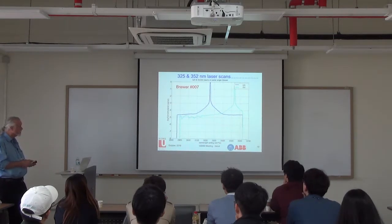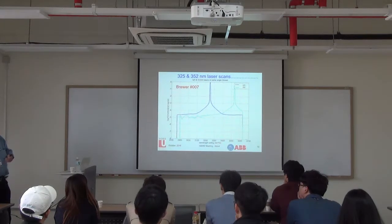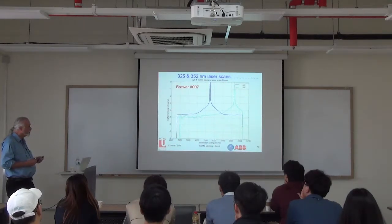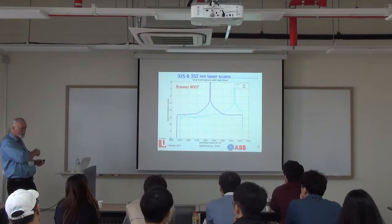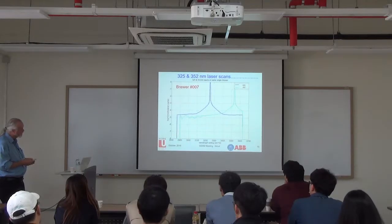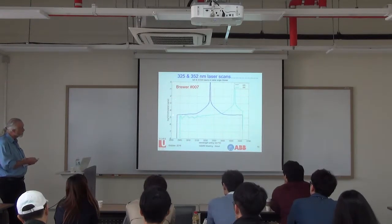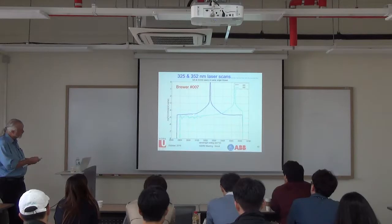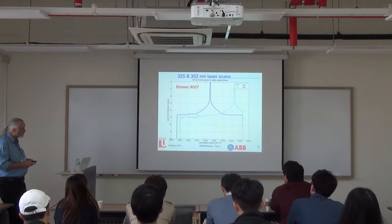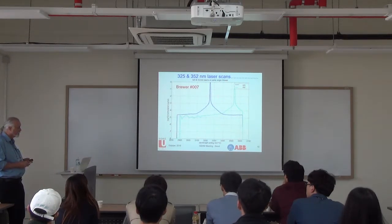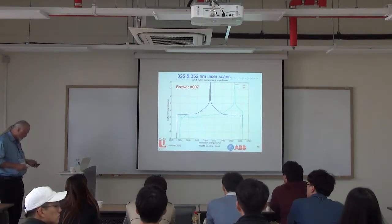Brewer No. 7 is a single monochromator—one diffraction grating, one entrance slit, one mirror, exit slits, and a photomultiplier detector. It's more susceptible to stray light than a double monochromator, where light passes through a second instrument to reject stray light. The gratings are really quite good, but there is an area of local stray light that is quite important because the gradient of ozone absorption is so high. It's the nearby stray light that is more important than light from far away.